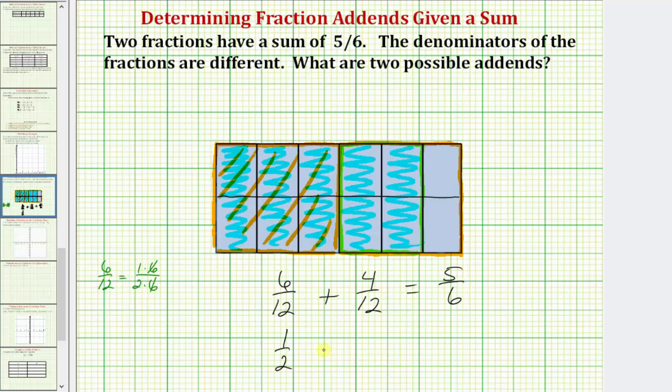So now we know that one-half plus four-twelfths equals five-sixths. Now we do have two fractions with different denominators that have a sum of five-sixths, so we can stop here. The two addends would be one-half and four-twelfths.